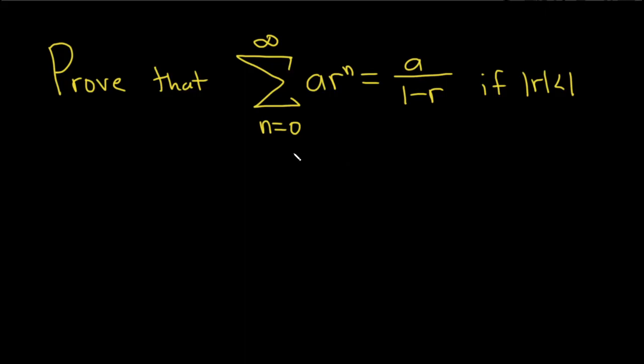So before we do the problem, just as a quick refresher, whenever you have an infinite sum, say we start at 0, it doesn't really matter where we start, and we go to infinity, and it's a sub n. This is always equal to the limit as n approaches infinity of s sub n. So this is called the nth partial sum.